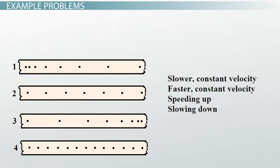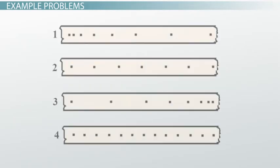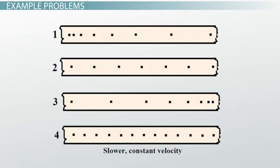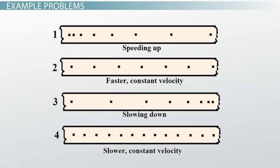If you're still watching this video, it means that you're ready for the answer. Here it is. The close together dots represent a slow moving object, because it didn't travel far between each tick. The far apart dots represent a faster moving object. Dots getting further apart represents an object speeding up, and dots getting closer together represents an object slowing down. And that's the answer.